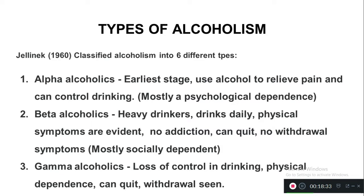The third type is gamma alcoholics. These people are more severe than beta alcoholics — they have a loss of control in drinking and drink more alcohol. They have physical dependence, needing alcohol to do any activities steadily. They can quit, but withdrawal symptoms are seen in clients with gamma alcoholism.